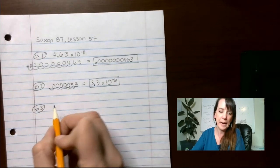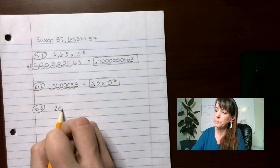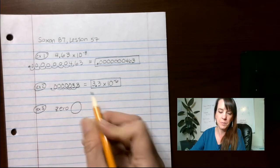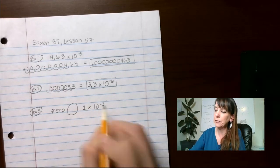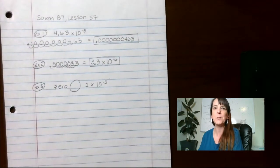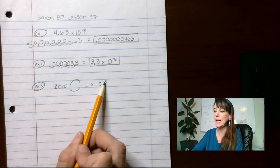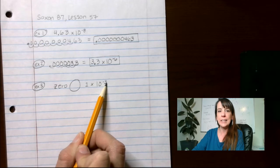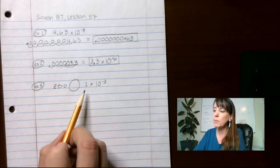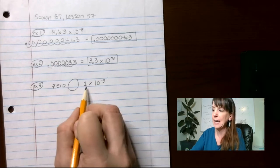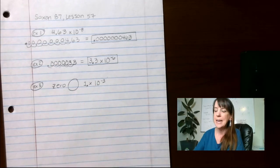This one says compare 0 to 1 times 10 to the negative 3. Well, straight off the bat, you don't have to put this into standard form to figure this out because we know that negative 3 here is going to be moving that decimal over. And remember what I said, if the decimal is not shown, it's at the end. So this would be a decimal here.